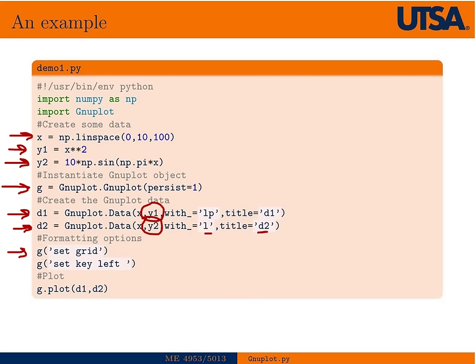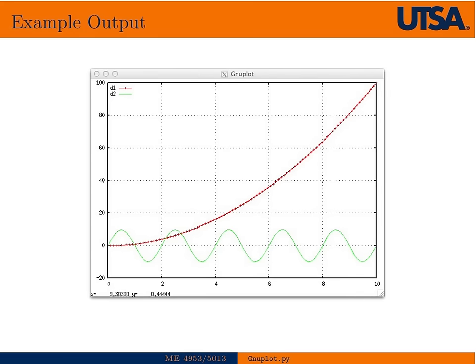A couple of formatting options, we're going to set grid and set the key on the left side, and then we'll go ahead and issue the plot command. And if we do that, this is the output we get. So, this is X squared, of course, and then this is that function of sine.